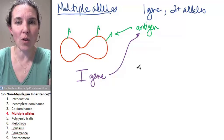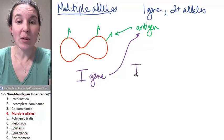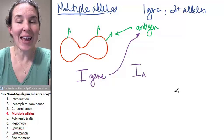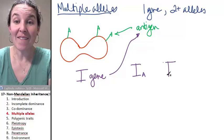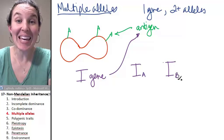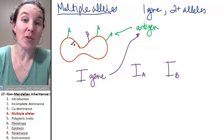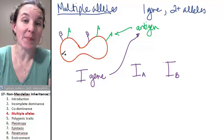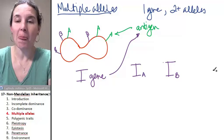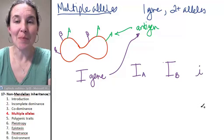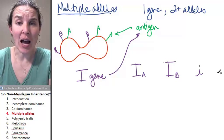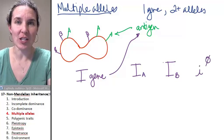Now, I'm going to tell you all the multiple alleles. You would expect you have IA which codes for A antigens. You can have IB which codes for B antigens. Does that work for you? And you can have little i, recessive i, which codes for no antigens.